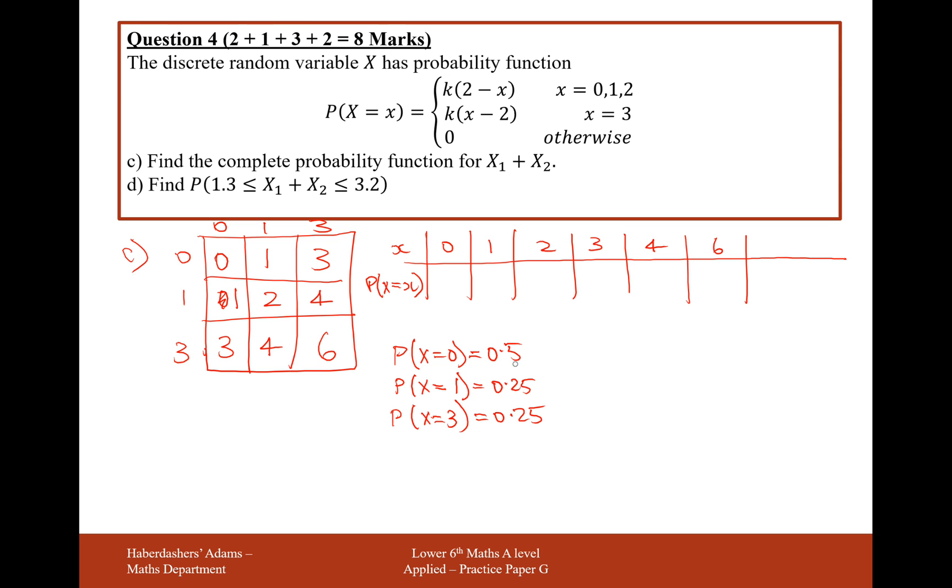The probability of getting a 0 must therefore be rolling a 0 and a 0. This would be 0.5 times 0.5. We'll treat these as half times a half, which would be a quarter. So the probability of them rolling a 0 when they add the two dice together is a quarter.